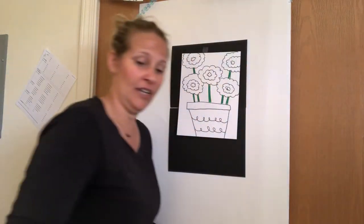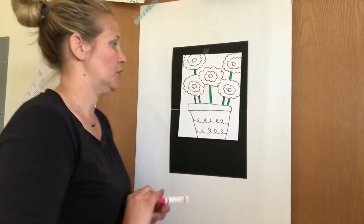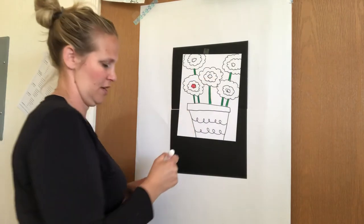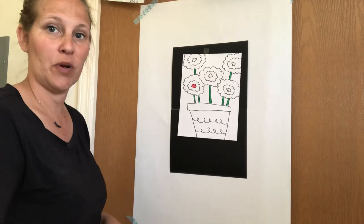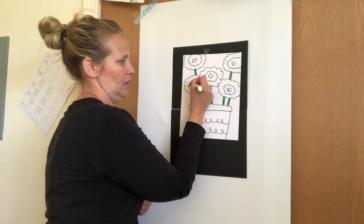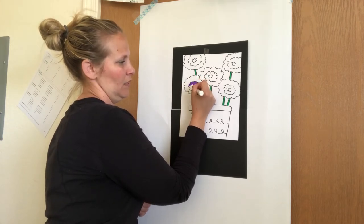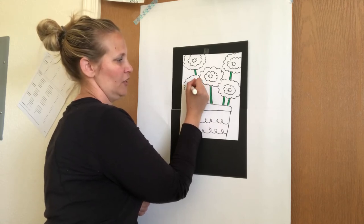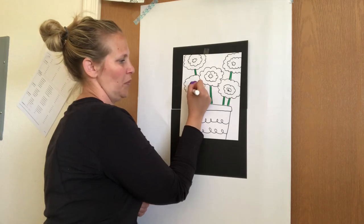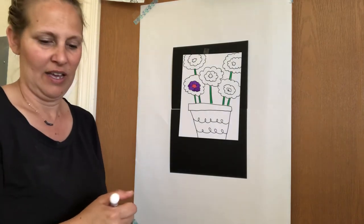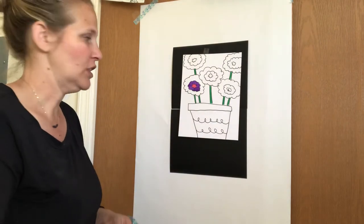You could get fancy and you could use multiple colors. Maybe you want the middle to be pink and then put purple on the next one and then maybe that outside color you choose to maybe do pink again to make a pattern, or you want to do maybe a yellow or an orange to lighten it up.